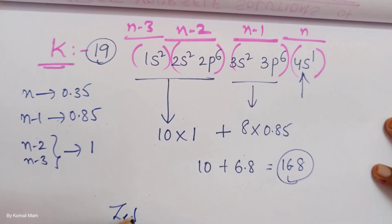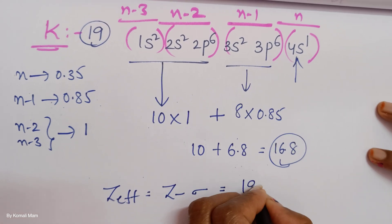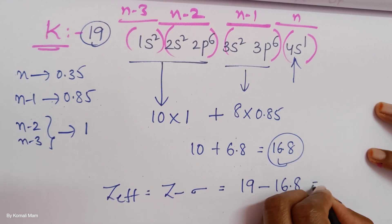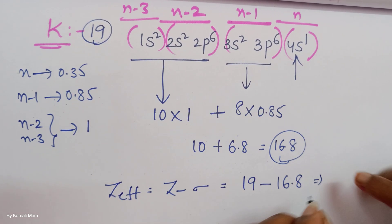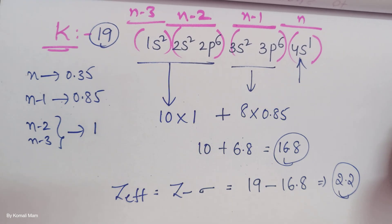Then what is the effective nuclear charge formula? Atomic number minus sigma. That is atomic number 19, sigma is 16.8. Here 0.2 is left, here 2. So 2.2. Got the clarity?